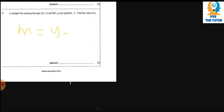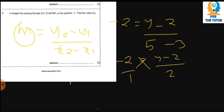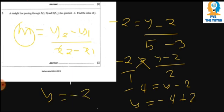Question 3 involves a straight line passing through A(3, 2) and B(5, y) with a gradient of negative 2. Find the value of y. The formula for gradient is m = (y2 - y1) / (x2 - x1). Since m = -2, y2 = y, y1 = 2, x2 = 5, x1 = 3, we get: -2 = (y - 2) / (5 - 3) = (y - 2) / 2. Cross-multiplying: -4 = y - 2, therefore y = -2.